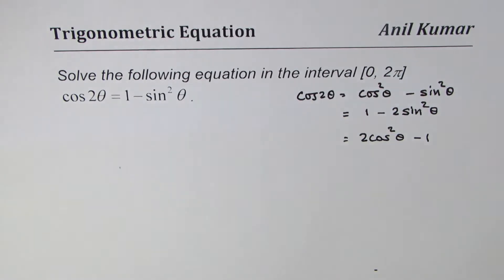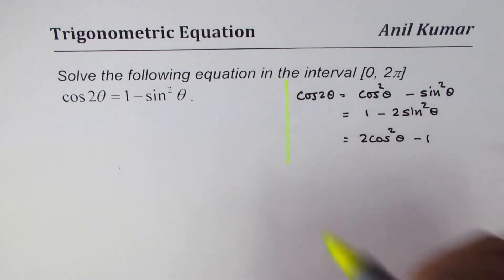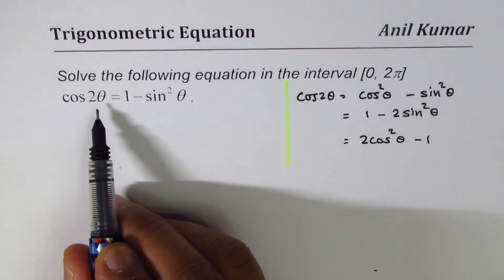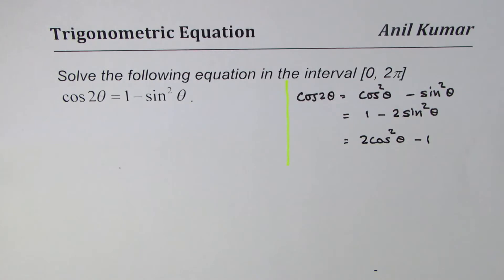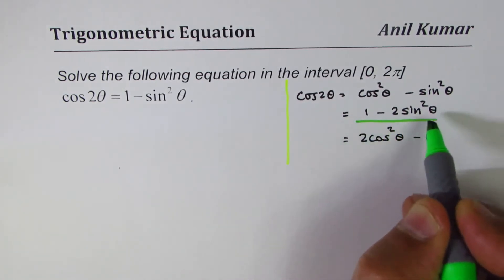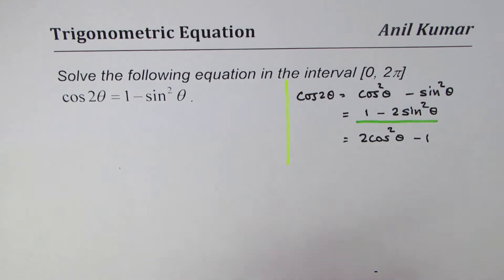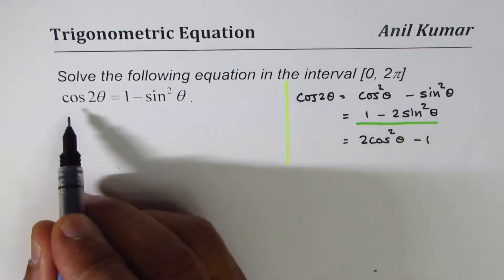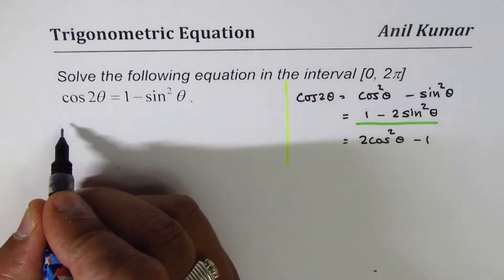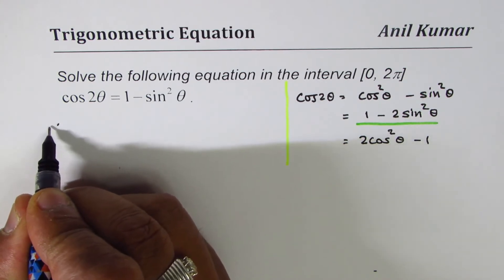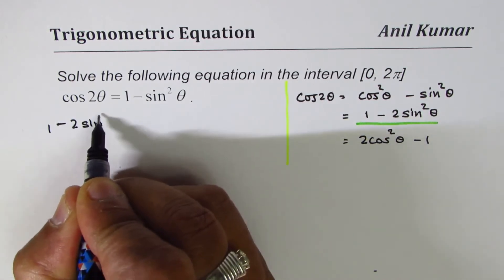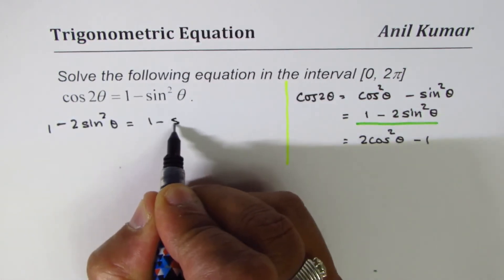I hope it's very clear which one to use — you can pause the video and answer the question. cos(2θ) should be written in terms of one minus two sin²θ, so we will get an equation with only sinθ. Let me write cos(2θ) as one minus two sin²θ. Then the right side will be: one minus two sin²θ equals one minus sin²θ.